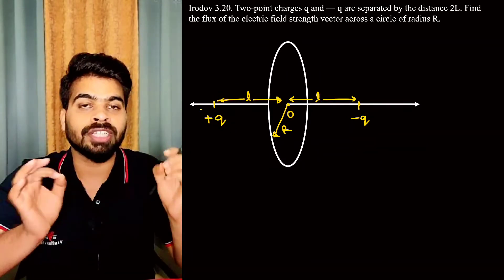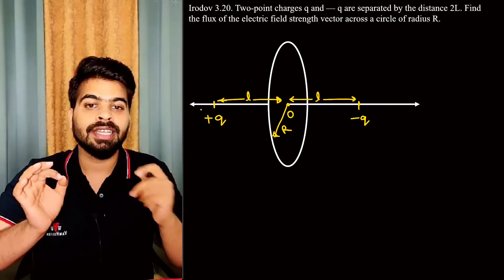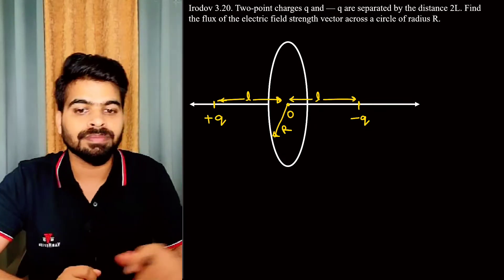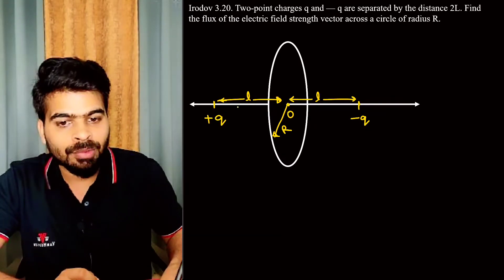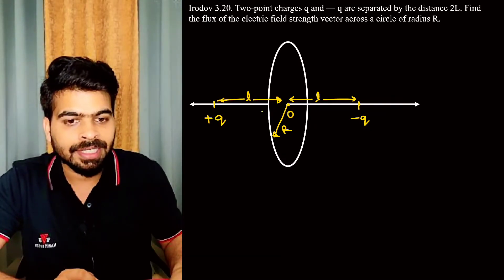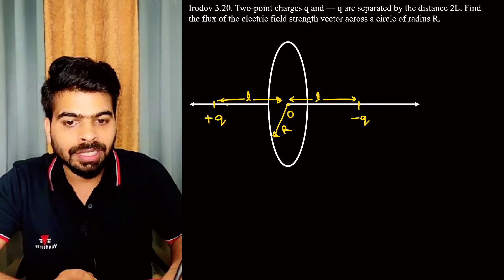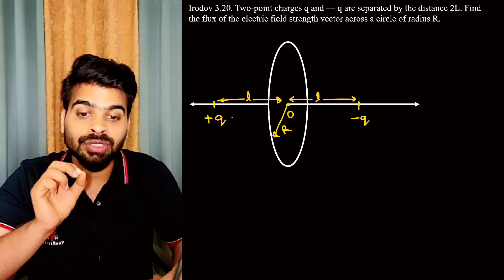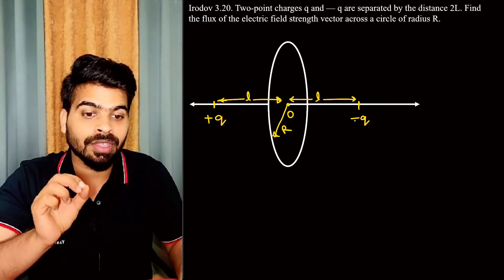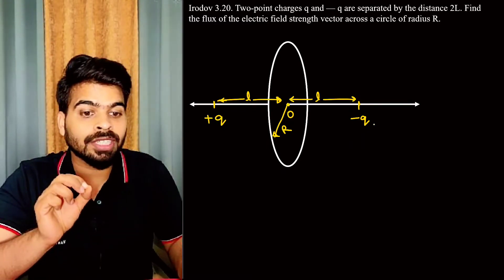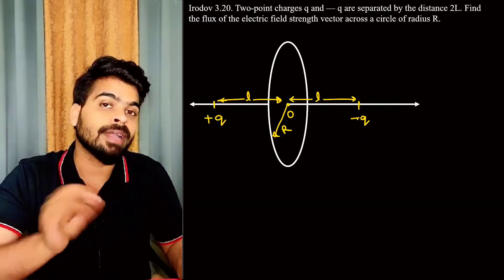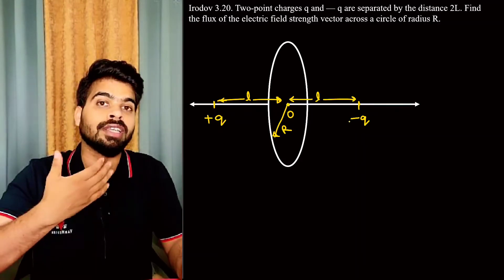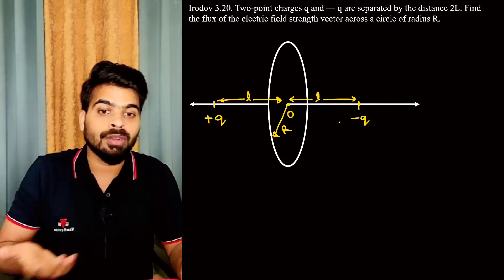Now we want to find the flux through this circle. Since the charges are plus q and minus q, the total contribution will effectively be doubled.